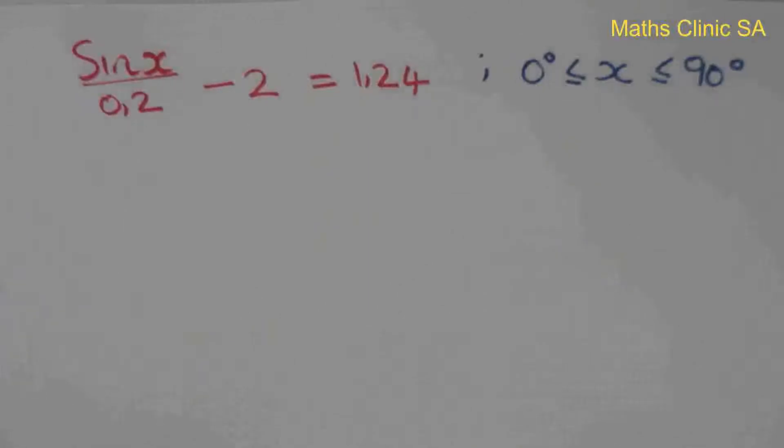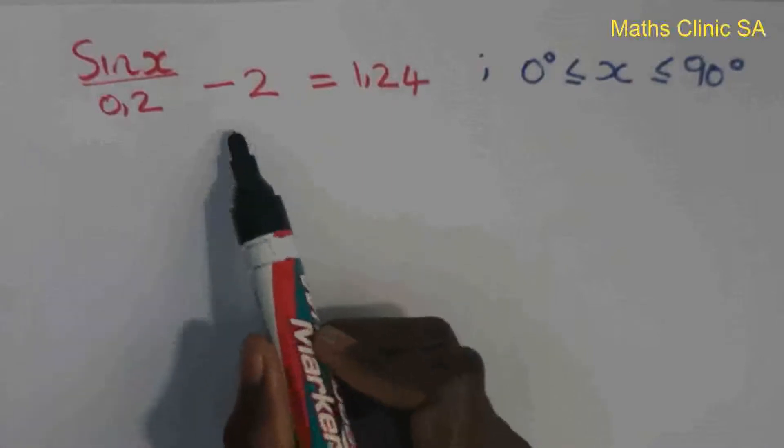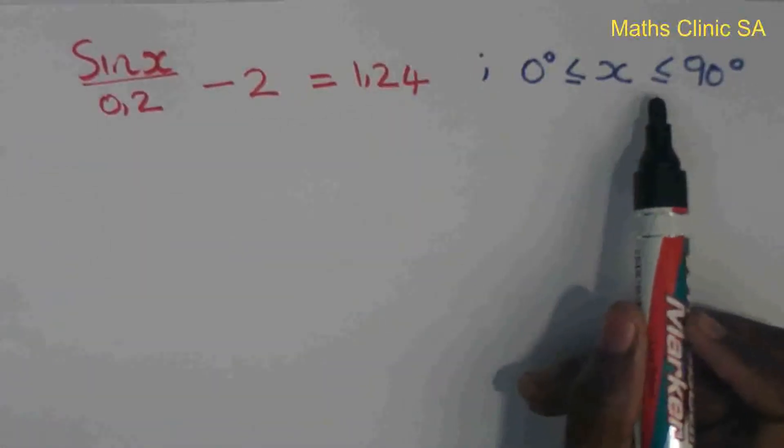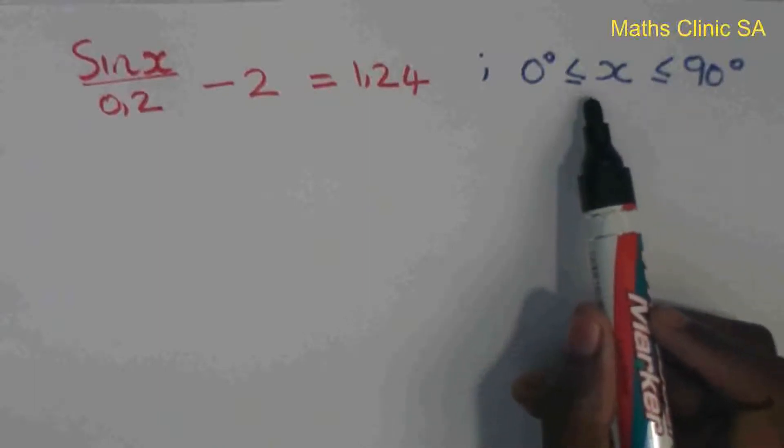Okay, the question is sine of x divided by 0.2 minus 2 equals 1.24, where x is greater than or equal to 0 degrees and less than or equal to 90 degrees.